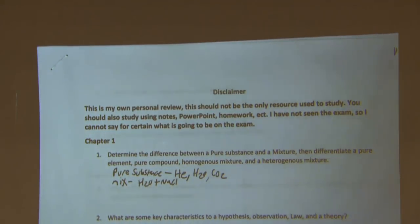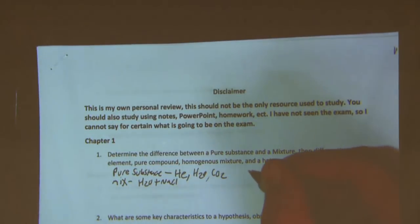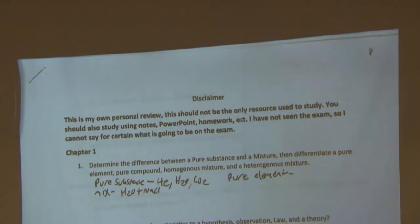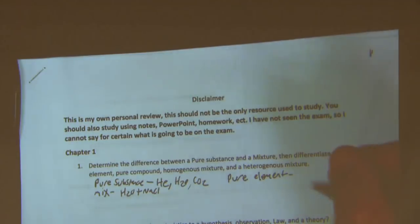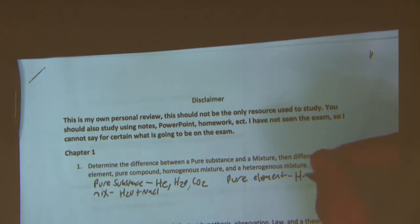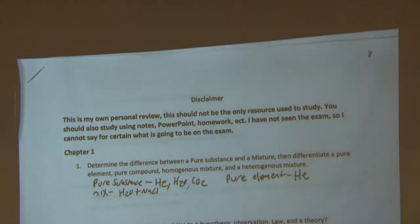We have two different types of pure substances: pure elements and pure compounds. A pure element is just the element itself — helium, sodium, lithium, any of those. A pure compound would be something like water, H2O.